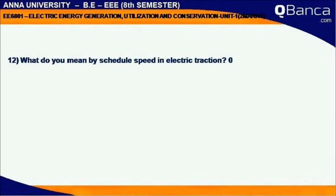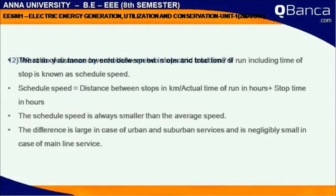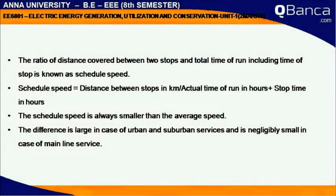What do you mean by schedule speed in electric traction? The ratio of distance covered between two stops and the total time of run, including the time of stop, is known as schedule speed. Schedule speed equals the distance between stops in km divided by the actual time of run in hours plus stop time in hours.